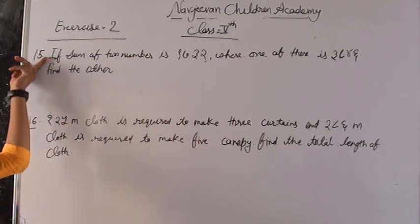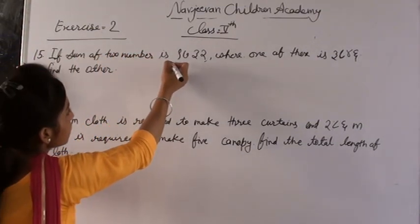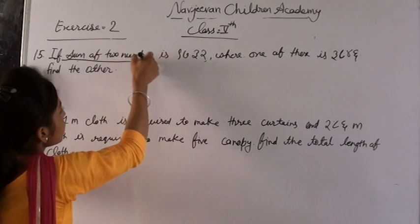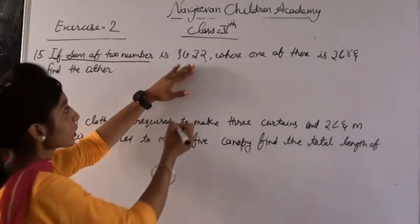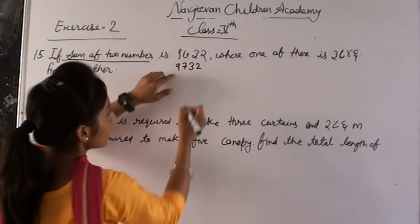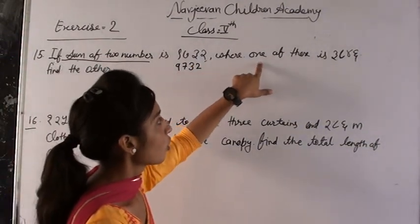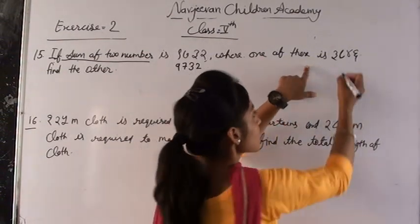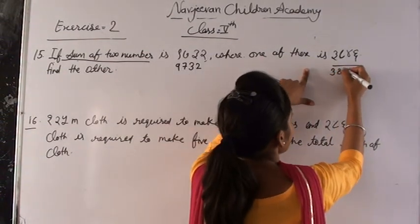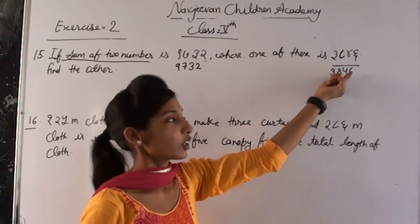Now answer question number 15. If sum of two numbers is 9,732, where one of them is 3,846.